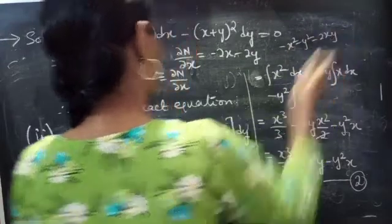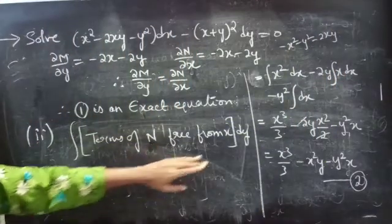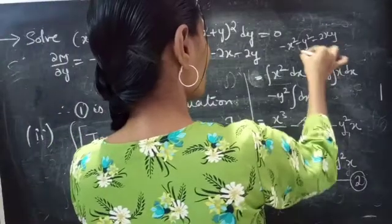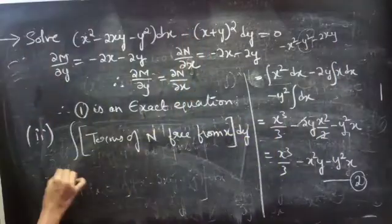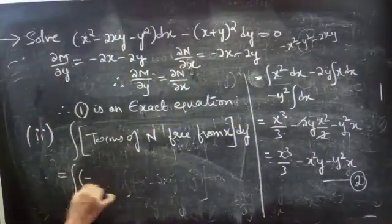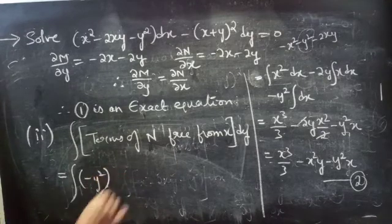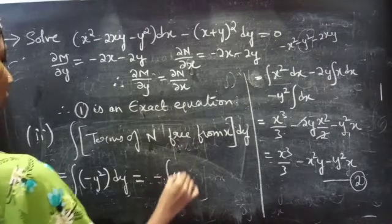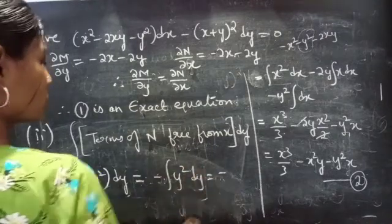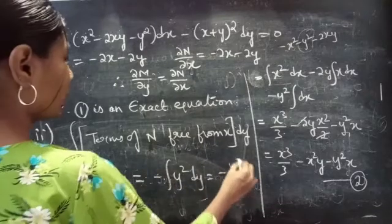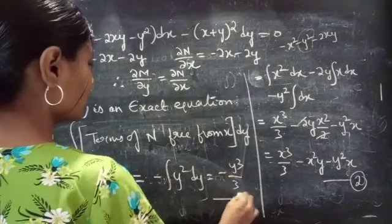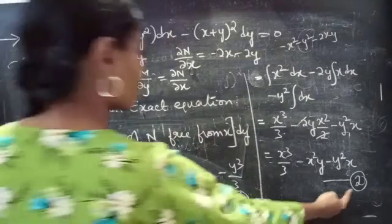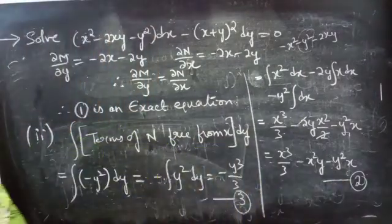For the second part, we take the terms of N which are free from x. The term free from x is minus y squared. So we integrate minus y squared with respect to y, which gives minus y cubed over 3. Consider this as equation 3.